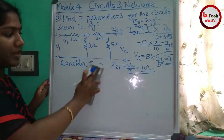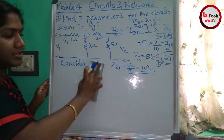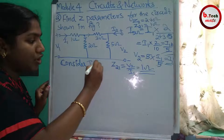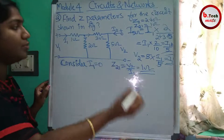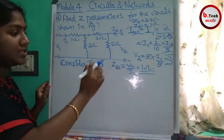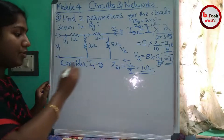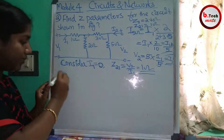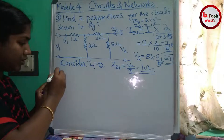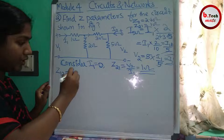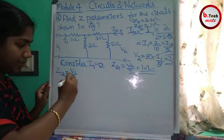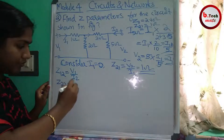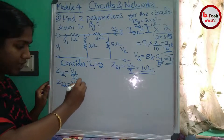Now we open the input port, setting I1 equal to zero. With the input port open, we find the remaining two parameters: Z12, which equals V1 divided by I2, and Z22, which equals V2 divided by I2.